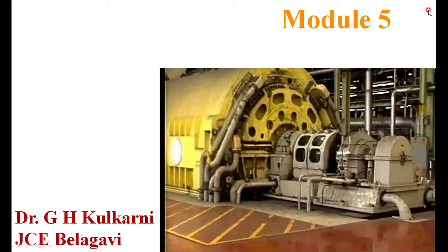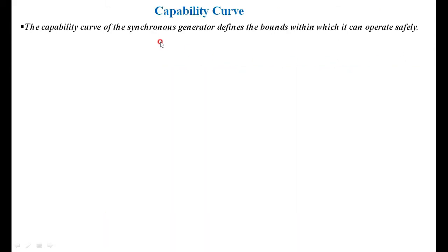In this session, we will study the Capability Curves of a synchronous generator. The Capability Curve of a synchronous machine or generator defines certain maximum limits or bounds within which it can operate safely. That is, we should not exceed these boundaries. These are some of the limitations of the synchronous generator.